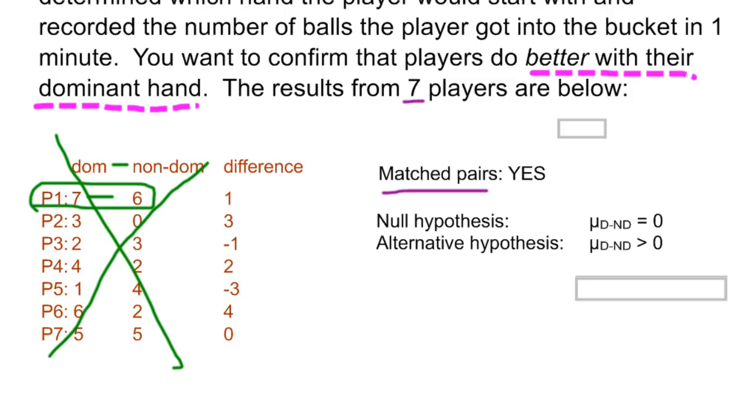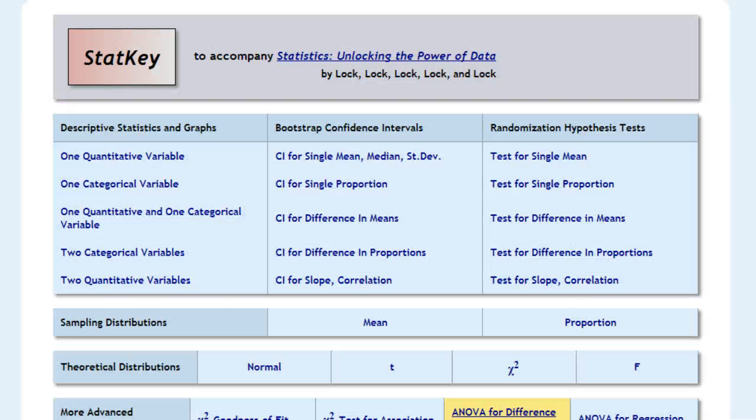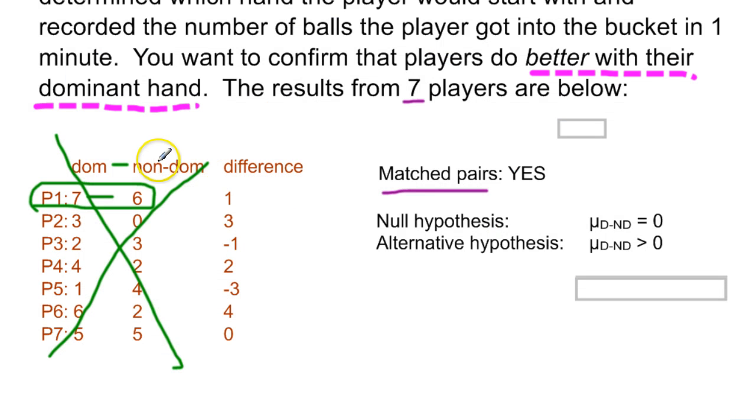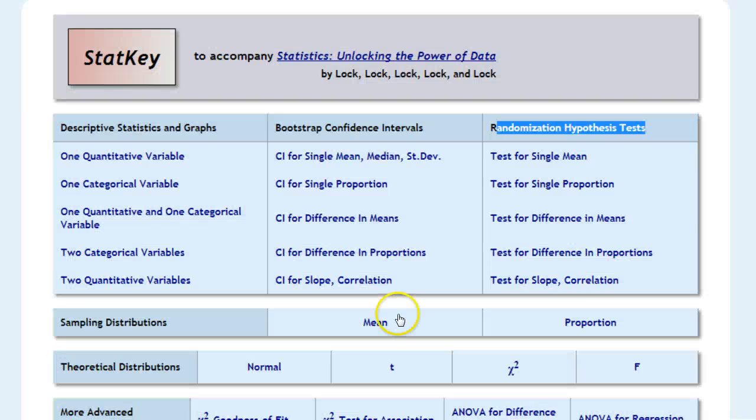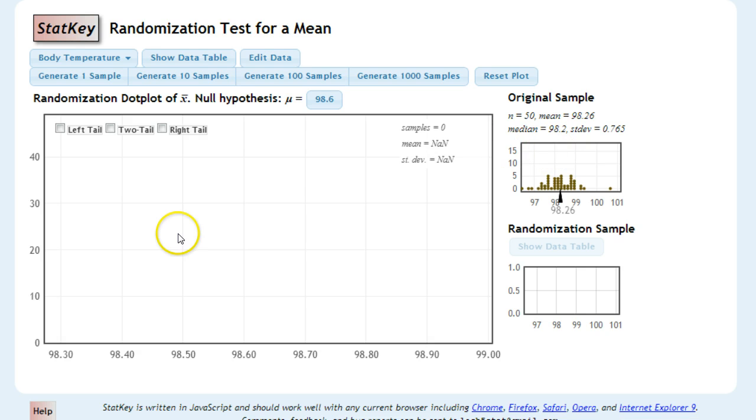Now, to go out and actually perform the test, we go to StatKey. And from StatKey, we're looking under our randomization test again, and we're doing a test for the difference of two means, except the fact that now that we got rid of all this, we really only have one quantitative variable. So we are actually going to do the test for a single mean, which is straight across from one quantitative variable here. Test for a single mean.